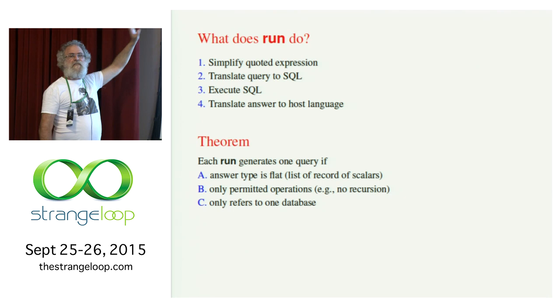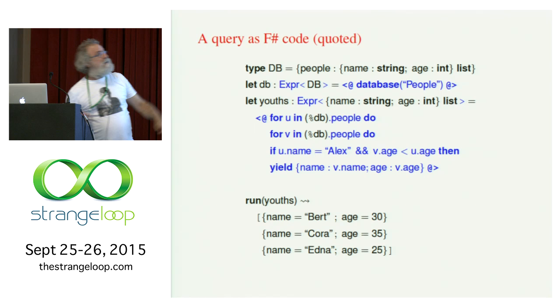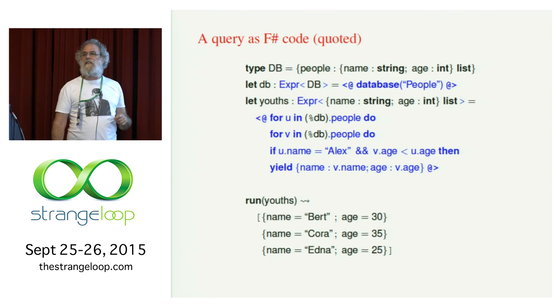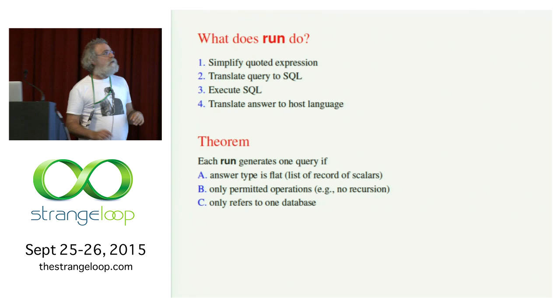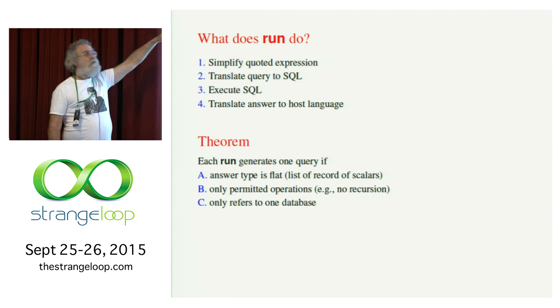We only do permitted operations. For instance, most versions of SQL don't implement recursion, so we better not use recursion. And we only refer to one database. If we refer to two different databases, that would be hard to translate into a single SQL query. Those are reasonable constraints we impose. You might want a type system that imposes all these, but we want it to run in standard F#, so we just assume users can check these and we check at run time.